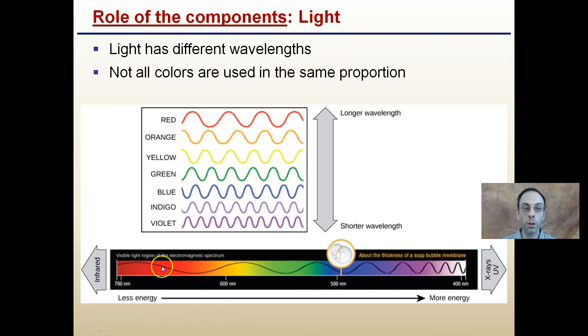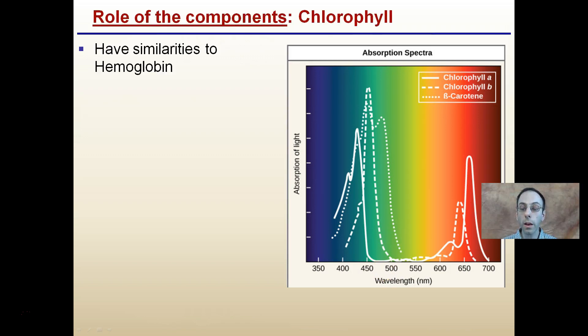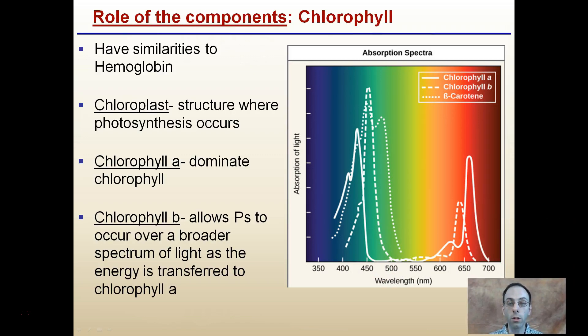ROYGBIV: red, orange, yellow, green, blue, indigo, and violet. We have our increasing here in energy with our shorter wavelengths. So X-rays and UV rays have more energy than do our infrared rays. Now, we're going to see that the chlorophyll uses different parts of this particular spectrum.